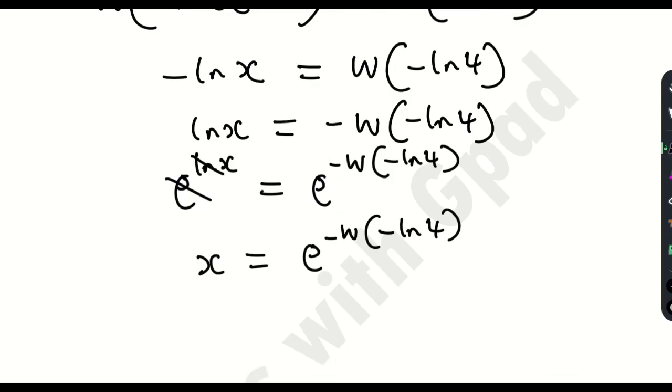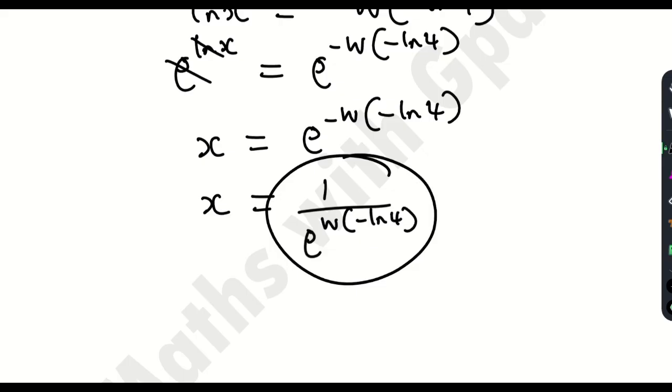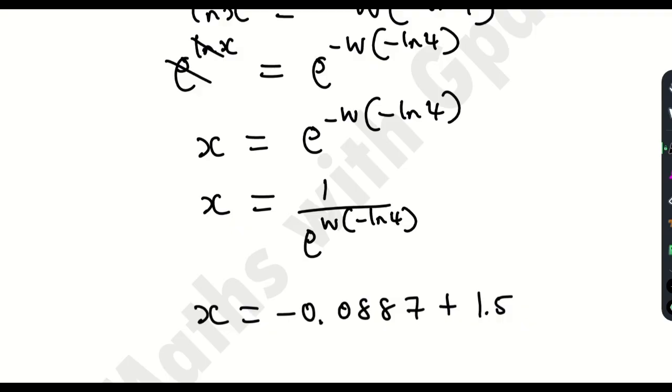Now I'm going to rewrite this as x is equal to... that negative log indices again, I'm going to have 1 over e to the Lambert W function of negative ln 4. So if you work this out, x will be equal to minus 0.0887 plus 1.512i.